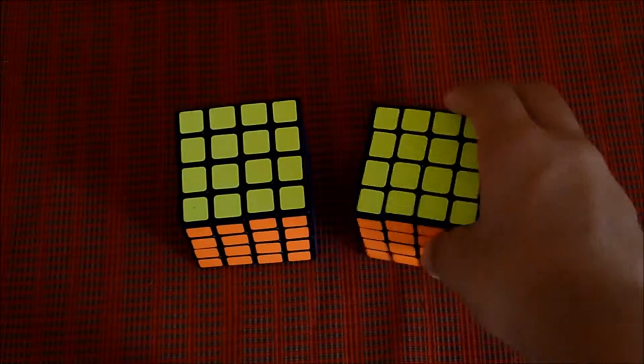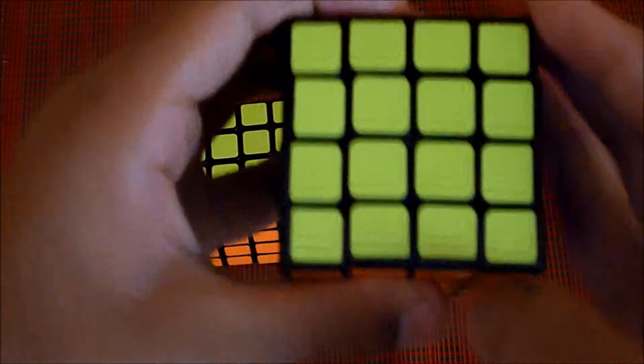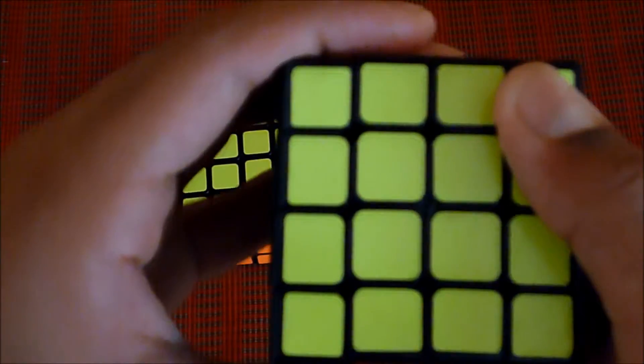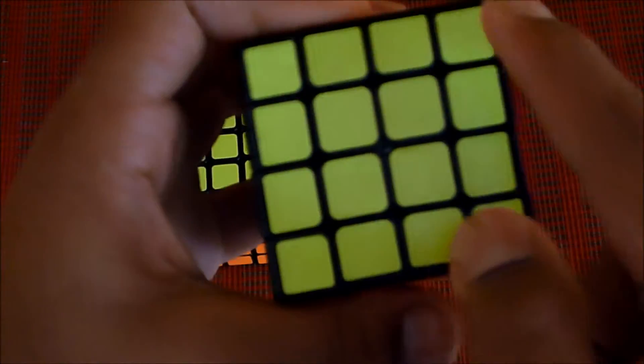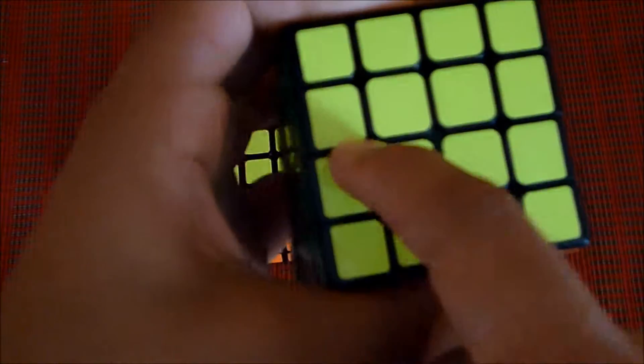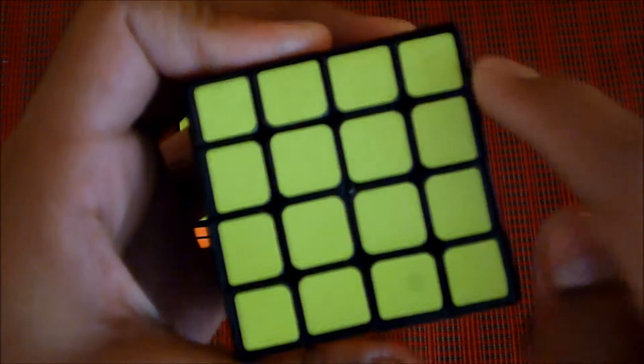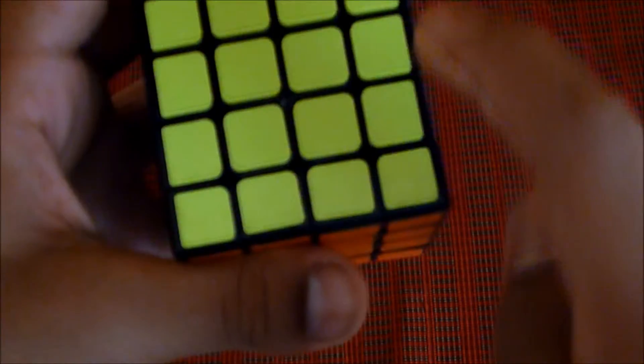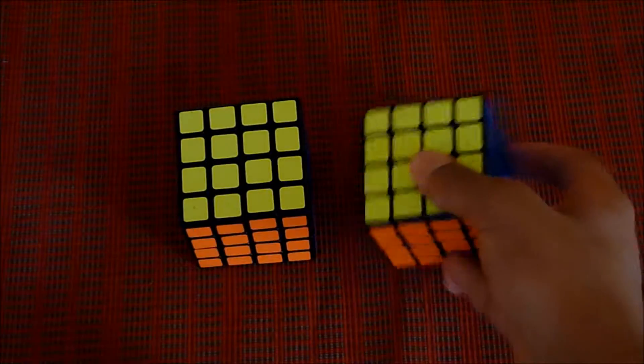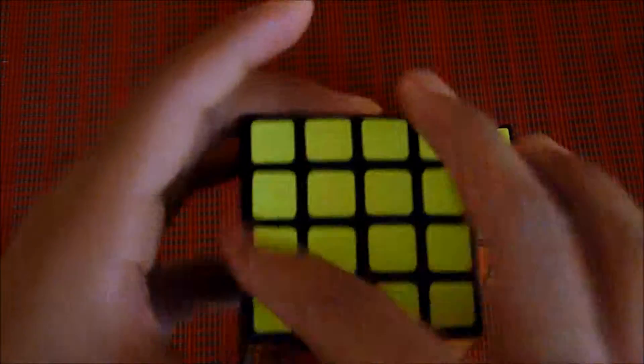Also on the Mini Aosu the size of the pieces is not reduced, it's actually cut down so the edges and corners are smaller than the centers and the corners are the smallest, so the edges and corners are not square but rectangles. Whereas on the Aosu they're all equal sized.